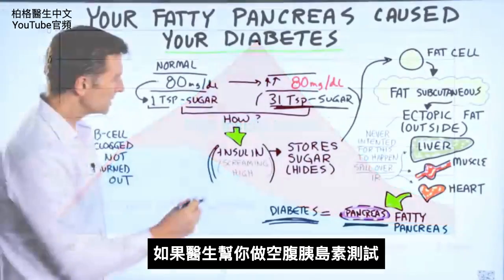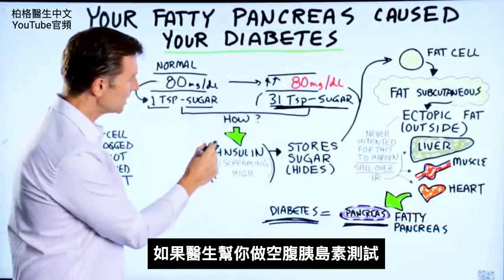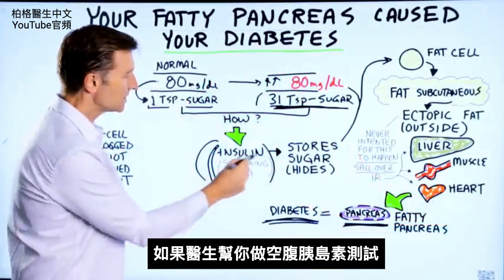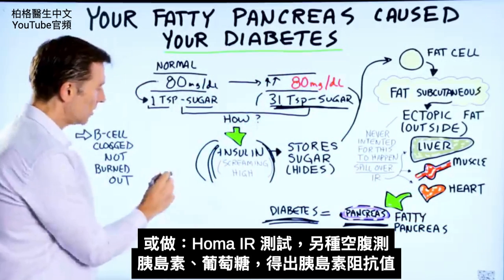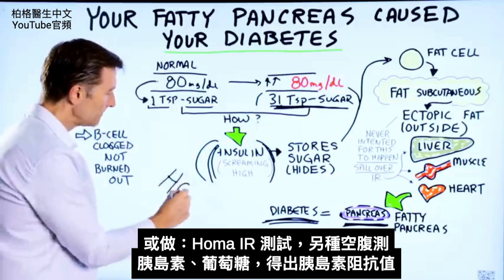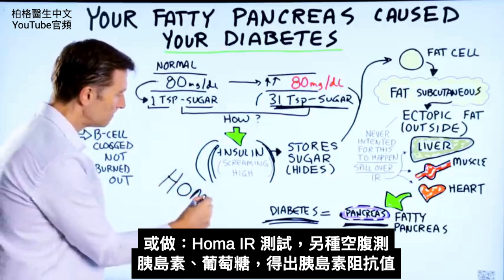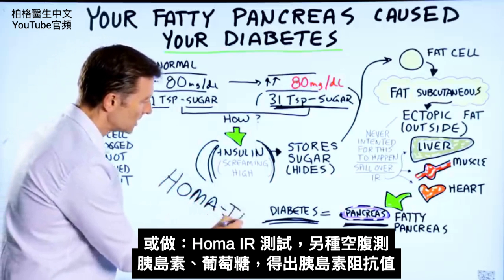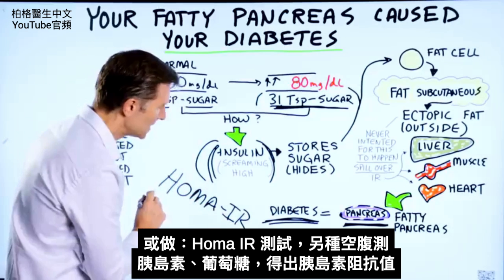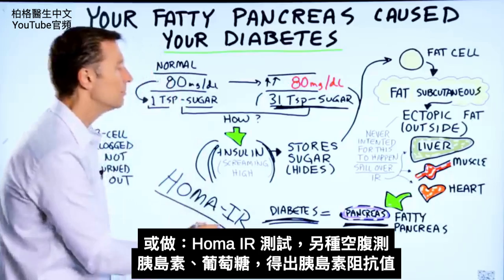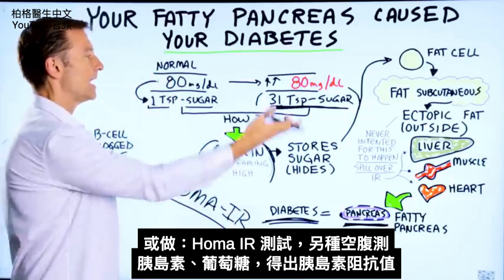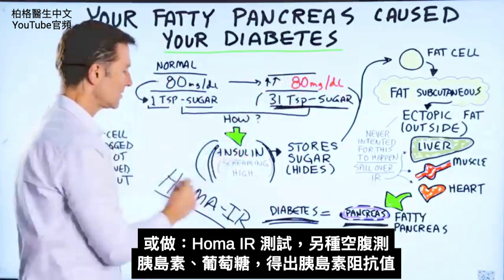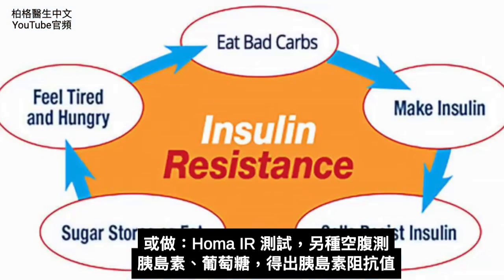Your doctor would have picked it up if they had done a fasting insulin test, or a test called HOMA-IR, which measures both fasting insulin and your glucose to assess insulin resistance.